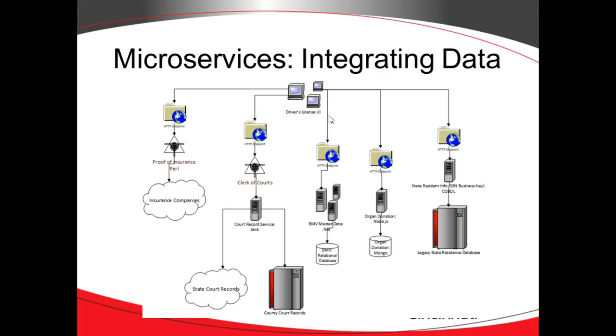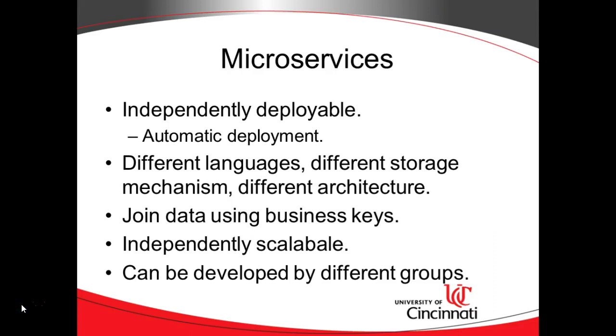While that's a different level of doing aggregation, it also gives us all of the flexibility that I've mentioned to date. So, microservices are independently deployable, oftentimes with automatic deployment, can use different languages, different storage mechanisms, different architecture. They join data typically with business keys at a higher-up layer than down at the data storage mechanism. They're independently scalable, and that's a big one I didn't mention earlier.